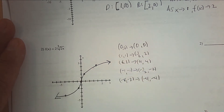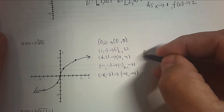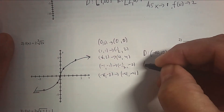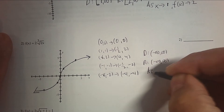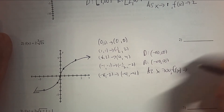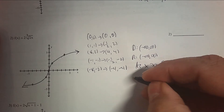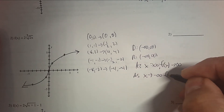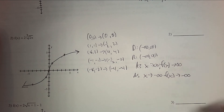So there's your graph. The domain is all real numbers. The range is all real numbers. As x approaches infinity, f(x) approaches infinity, so the right end goes up. As x approaches negative infinity, the function approaches negative infinity, so the left end goes down.